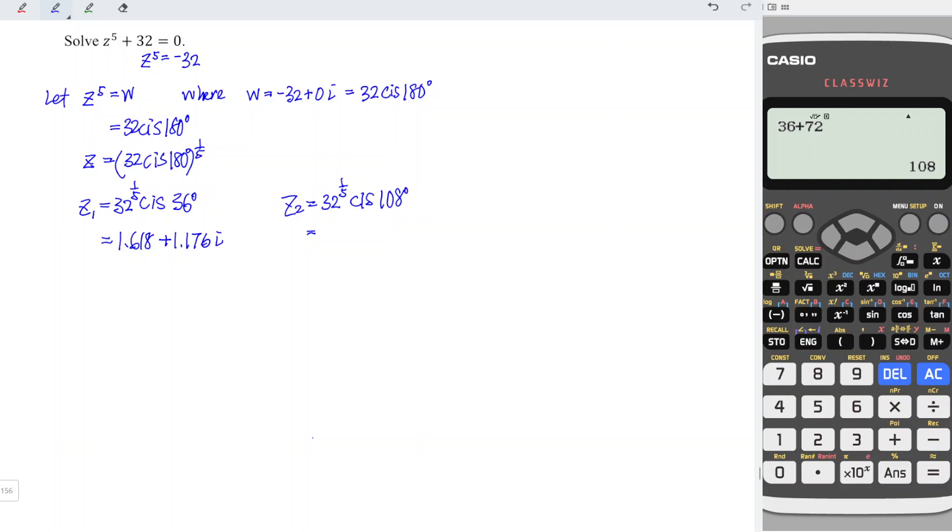Again, by using calculator, we can refer back to what we have done previously. Refer back to the cos, and we should now change the angle to 108. Press equal, we should obtain negative 0.618. And now change cos to sine, since we want the imaginary part. So we have positive 1.902i.